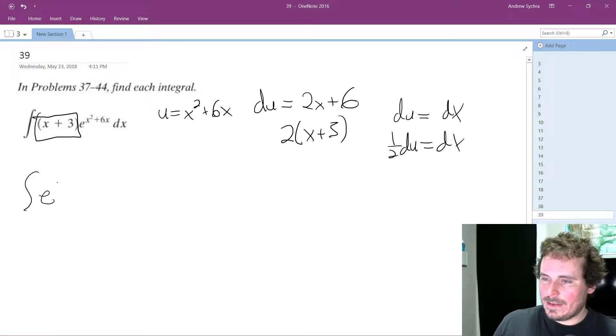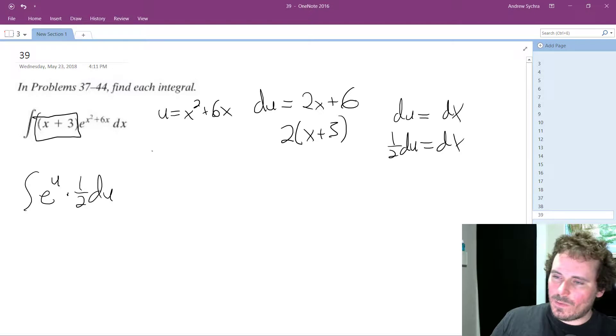So what we do is we integrate e raised to the u, and then times one half du, because the du incorporates the x plus 3 dx and we have the one half.